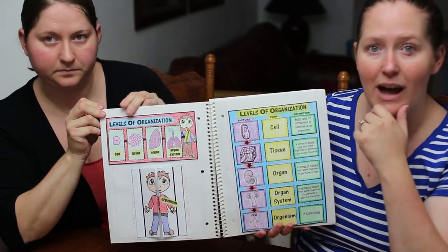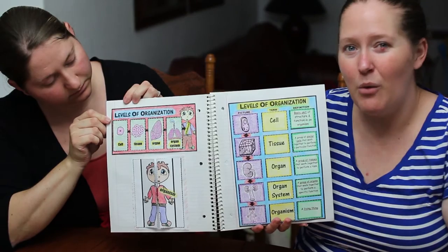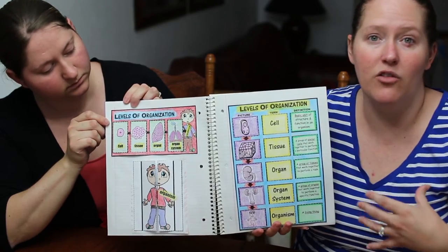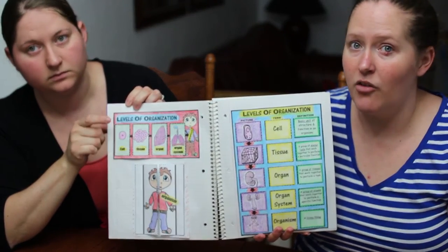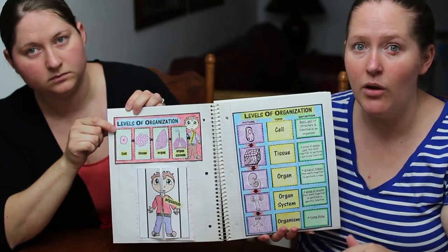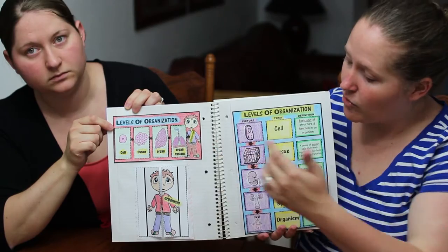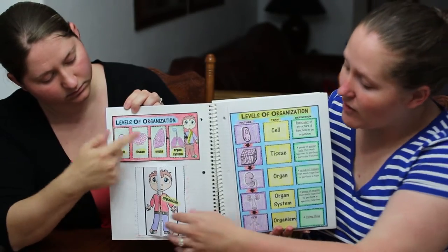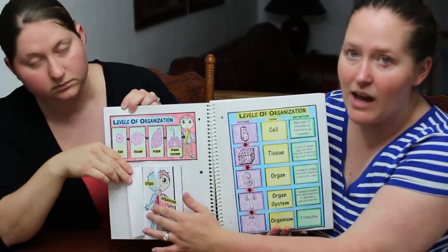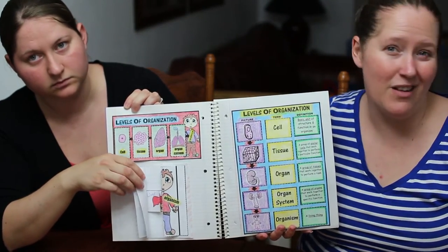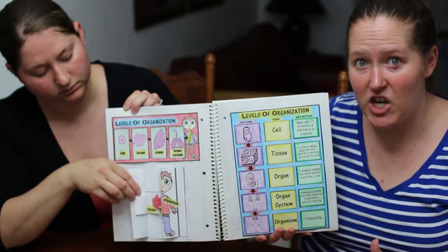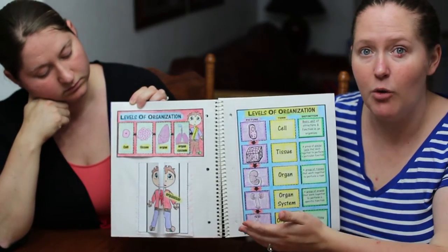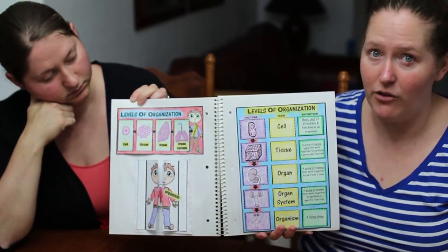Over here are more activities on levels of organization. Now that we know all living things are made of cells, students explore how cells are organized — from cells at the lowest level all the way up to an organism. Students cut out and paste to demonstrate those levels. There are also similar alternative activities you can use to differentiate, or use one as a quick exit ticket and one in the notebook.